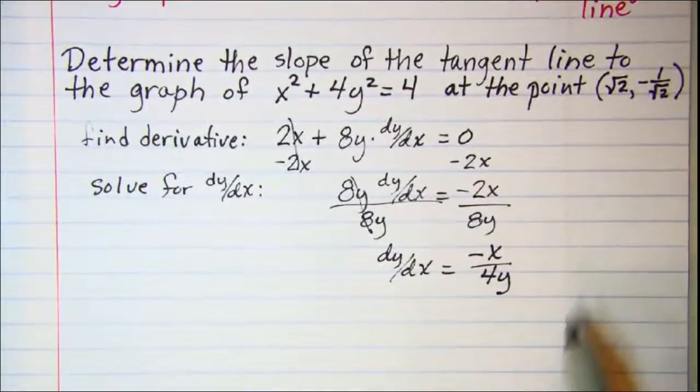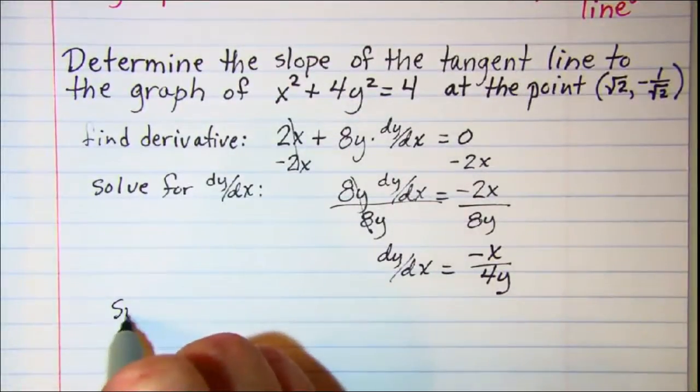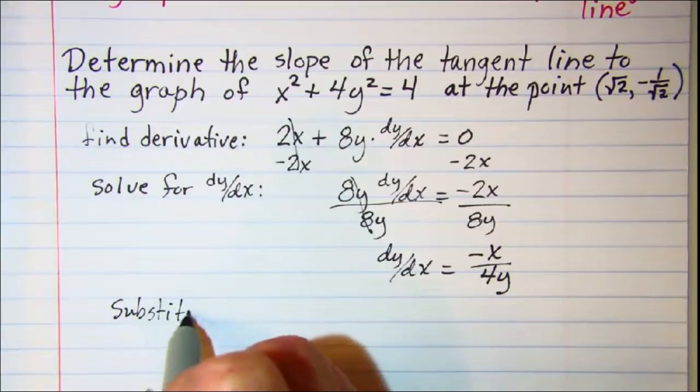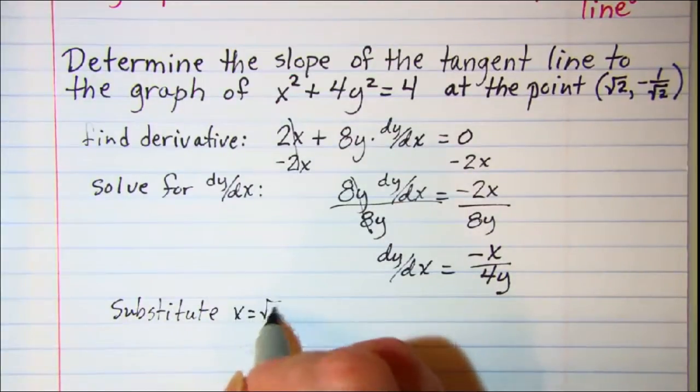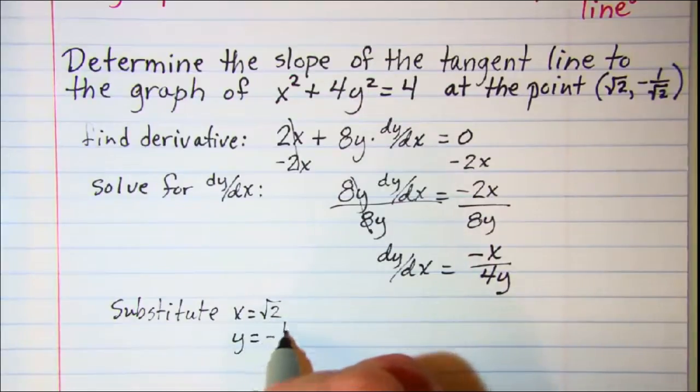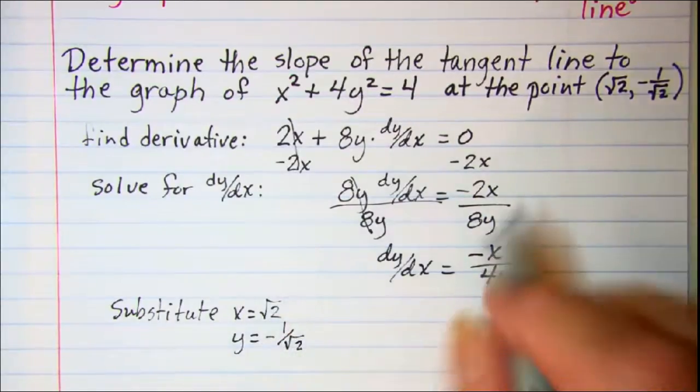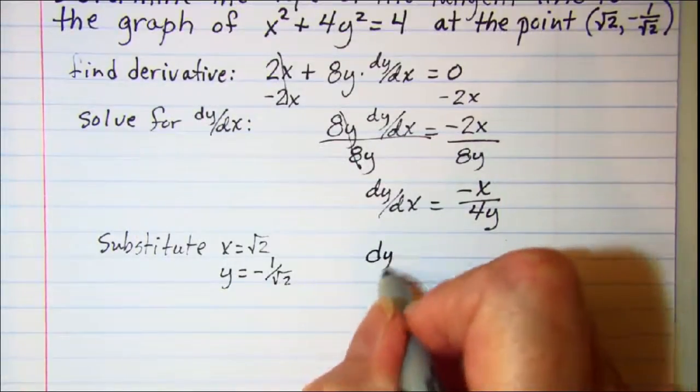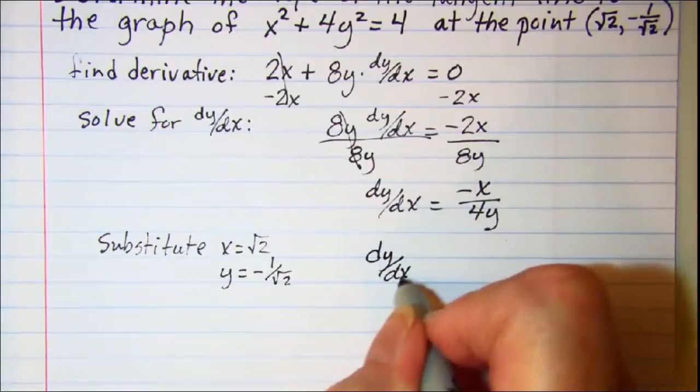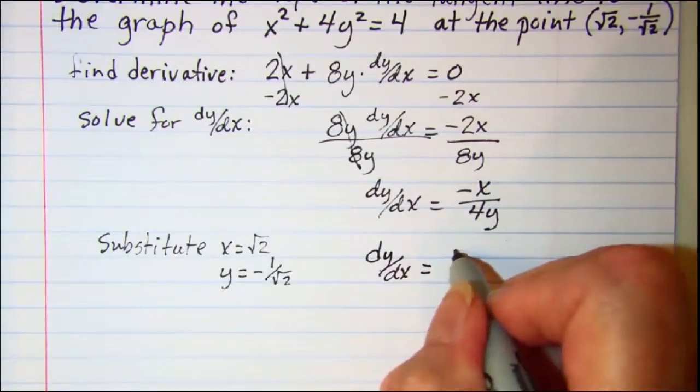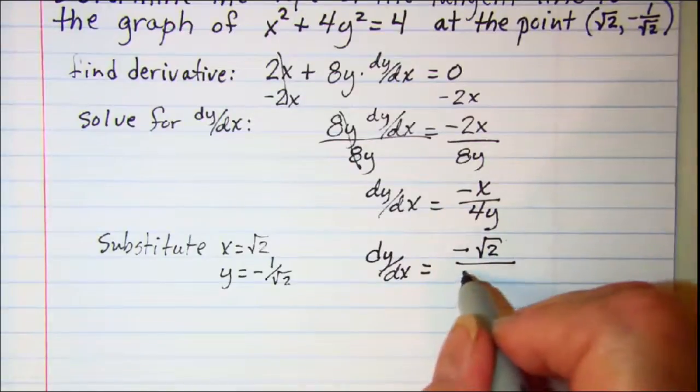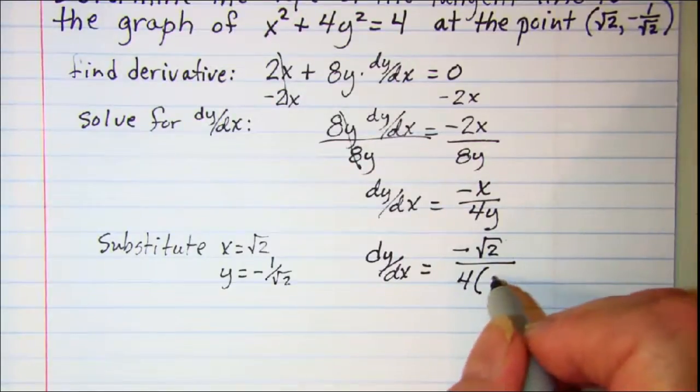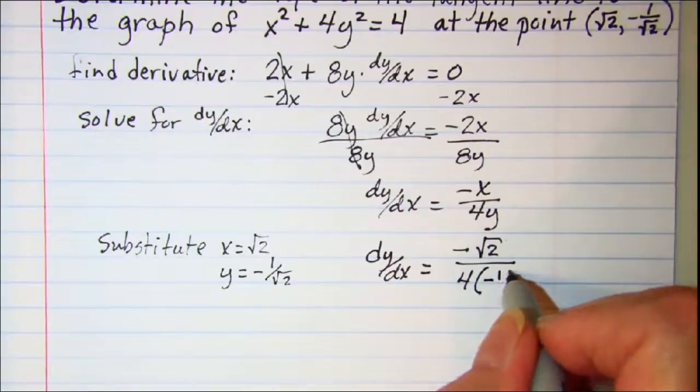Now we can substitute x is root 2 and y is negative 1 over root 2 for our point. So dy dx is equal to negative root 2 over 4 times negative 1 over root 2.